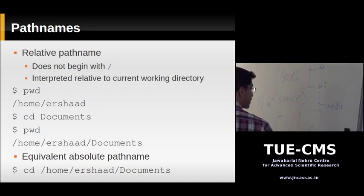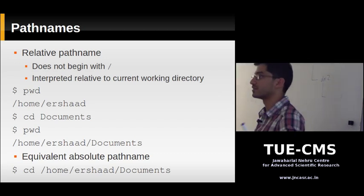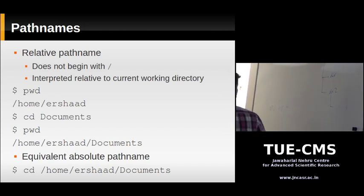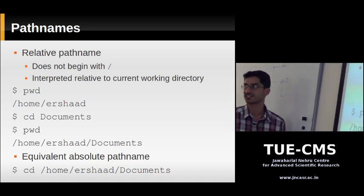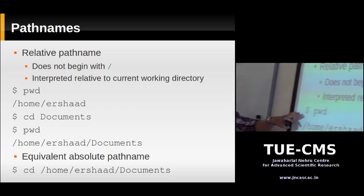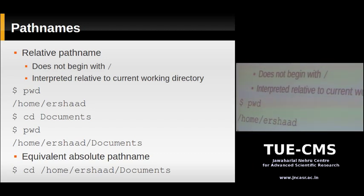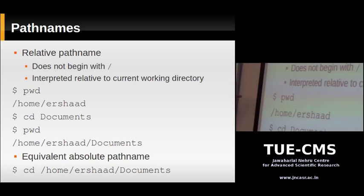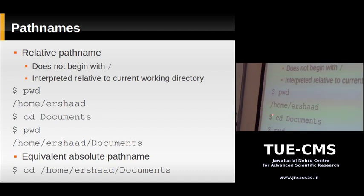Relative path names are always relative to your current working directory. If you type a relative path, it starts from your current working directory. For example, the PWD command (where $ indicates the prompt) shows your current directory. If you type 'cd documents', that's a relative path — it doesn't begin with a slash. It's relative to wherever you currently are, so it changes to the documents subdirectory within your current directory.